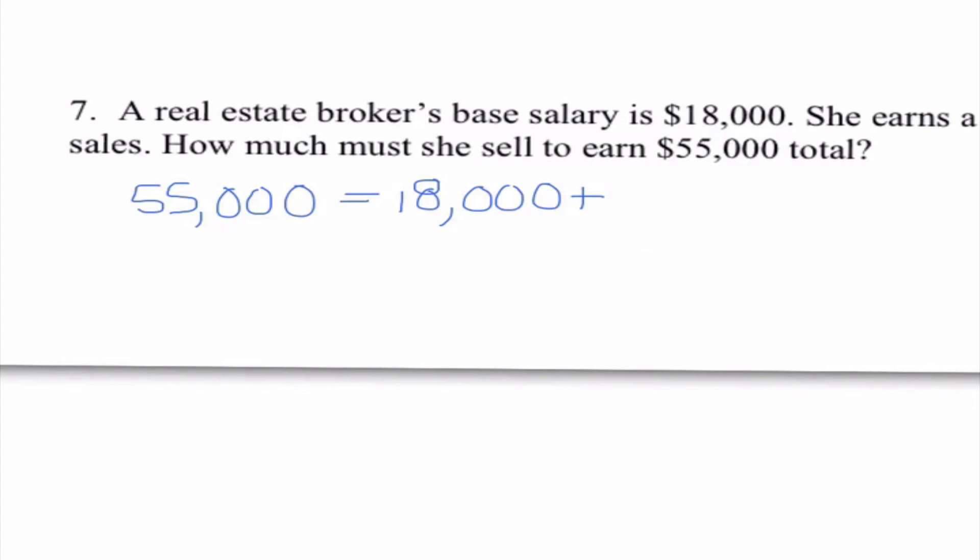So in order to figure out her commission, it is 4% of her total sales. We need to remember that when we're dealing with percentages, that means that we move our decimal place point over two places. So it's going to be 0.04 times x. And x here is representing the amount of total sales, or the amount of sales that she is selling.